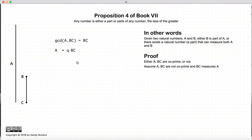Now, let's look at the situation where the greatest common divisor between A and BC is BC. In this case, A is measured by BC. And BC is measured by BC. So, BC is one part of A.